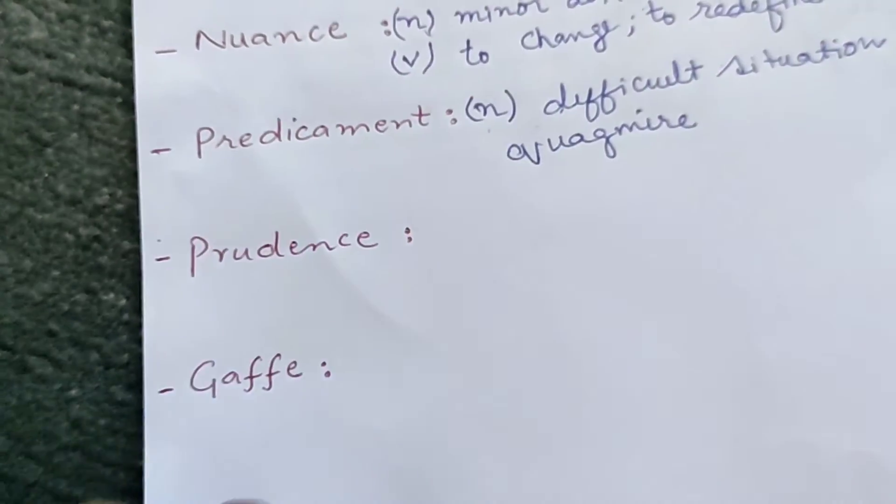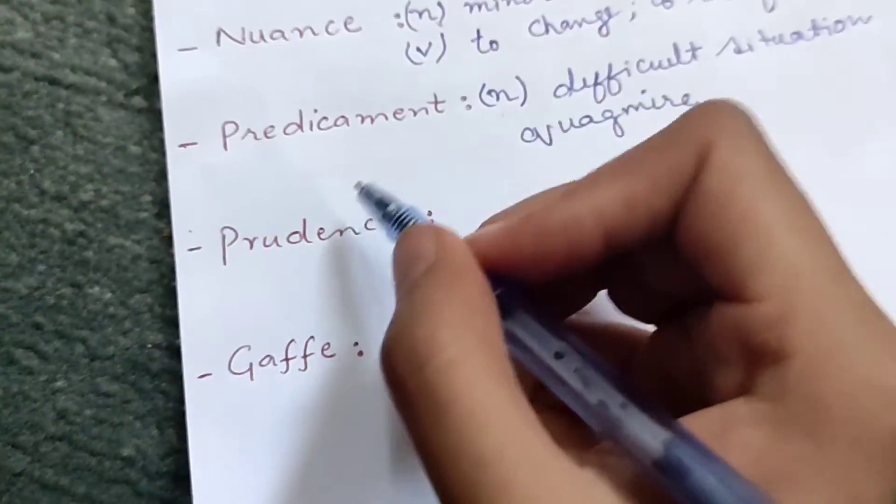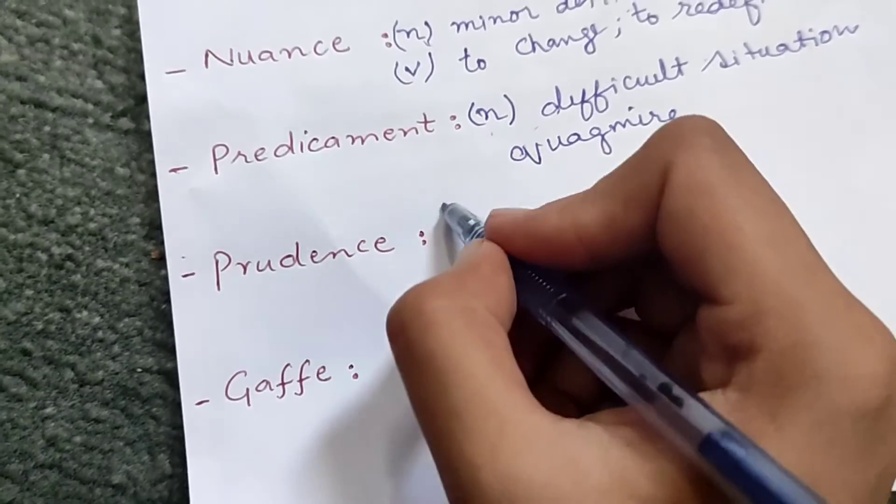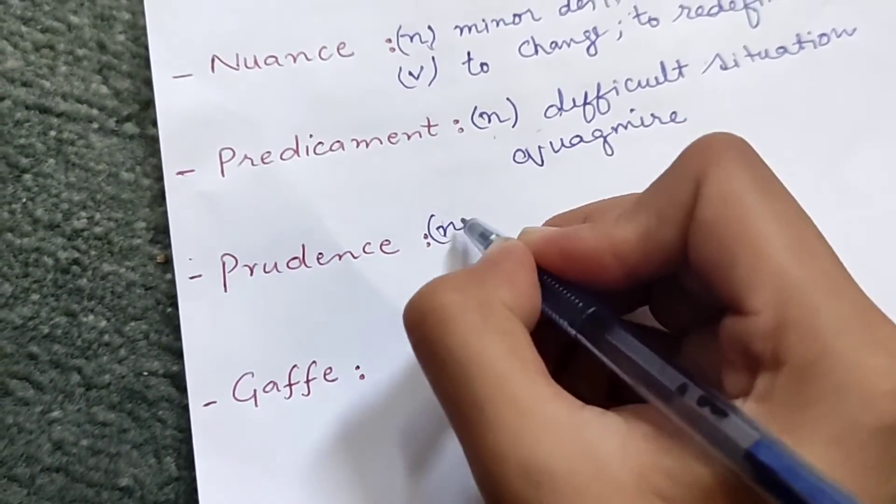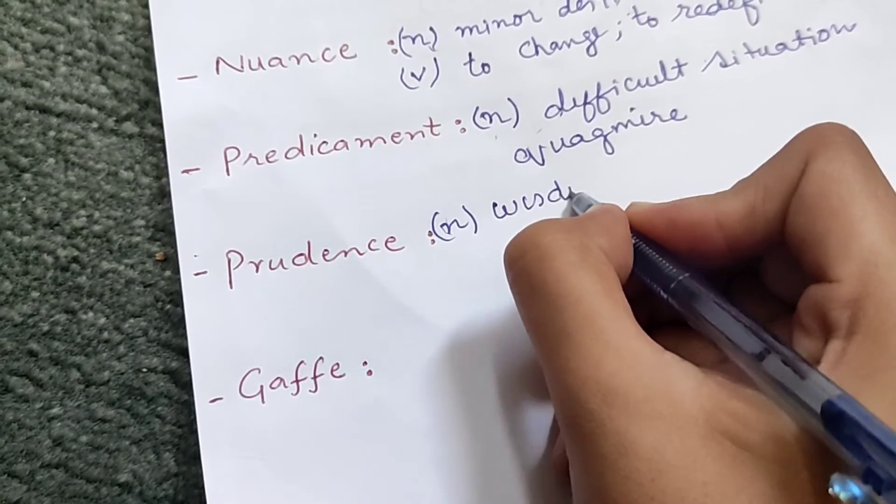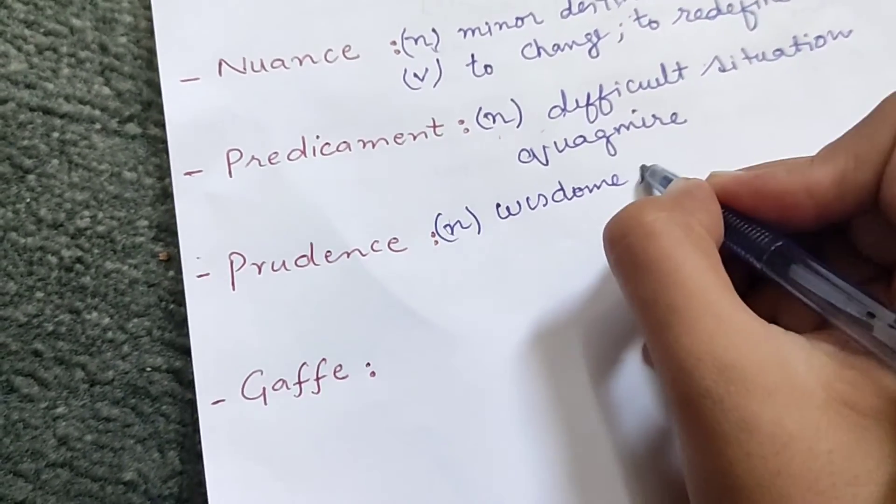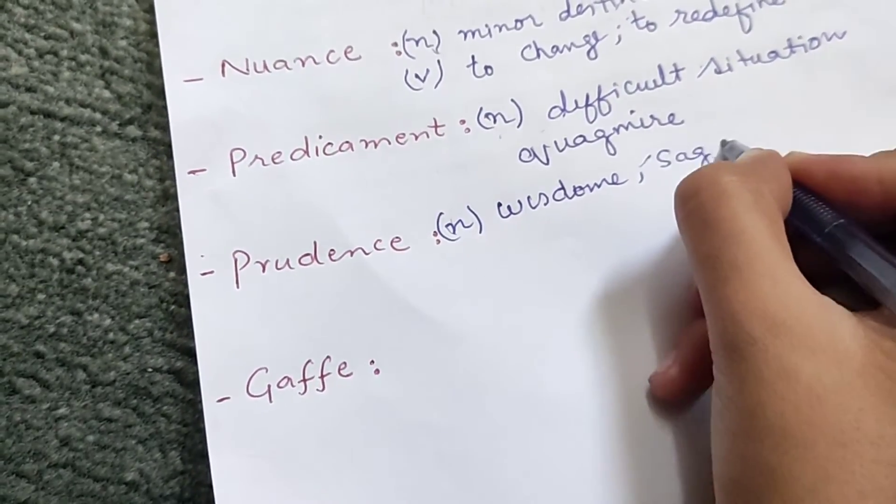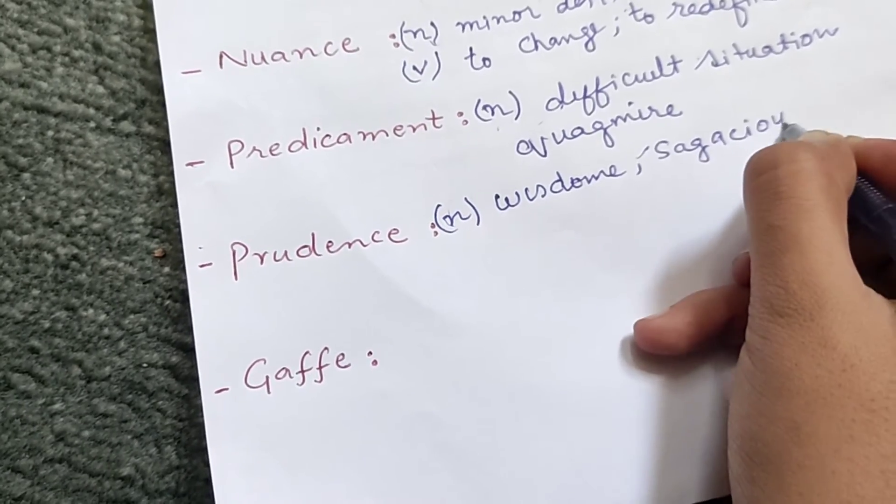The fourth word is prudence. Prudence, this means as a noun, wisdom or sagacious.